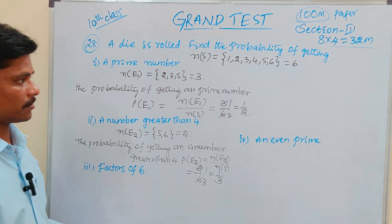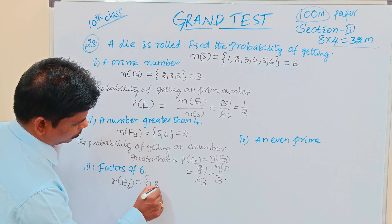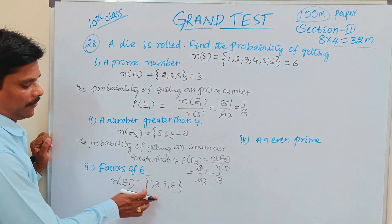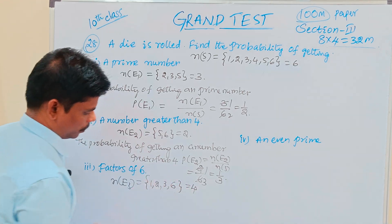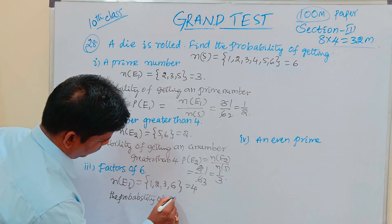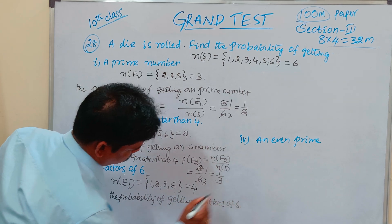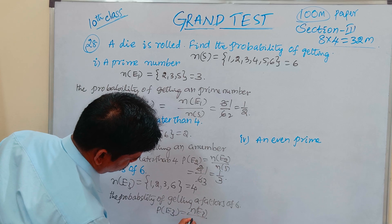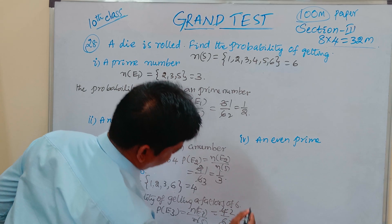Next, a factor of 6. Factors of 6 must be taken as N of E3. Factors of 6 are 1, 2, 3, and 6. Factors means numbers divisible by the given number — 1, 2, 3, 6 — total of 4. So P of E3 equals N of E3 by N of S, that is 4 by 6, which equals 2 by 3.